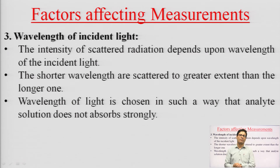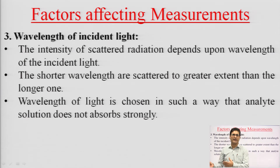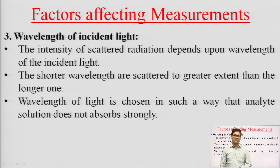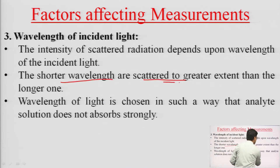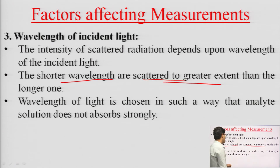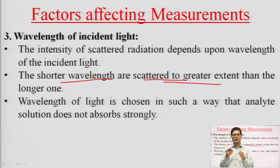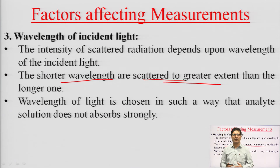The third factor is the wavelength of incident light. As seen in Rayleigh's law, scattering is inversely proportional to the fourth power of wavelength — the smaller the wavelength, the greater the scattering. The intensity of scattered radiation depends on the wavelength of incident light, so shorter wavelengths are scattered more than longer wavelengths. Wavelength of light is generally chosen so that the analyte solution does not absorb strongly — absorption should be minimum and scattering should be more when performing nephelometric determinations.